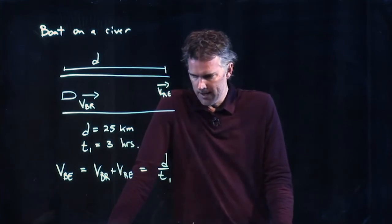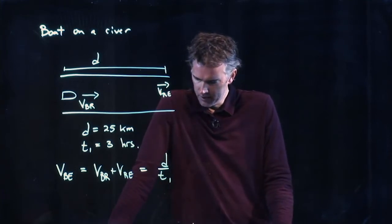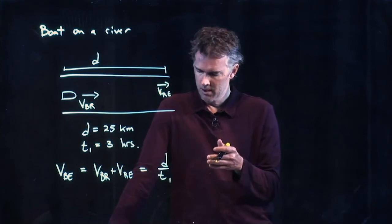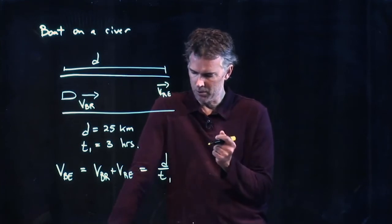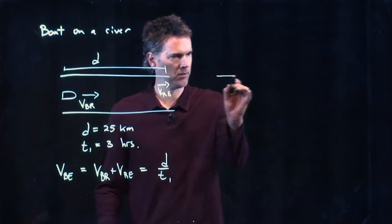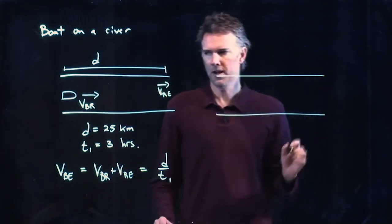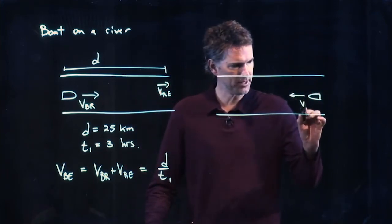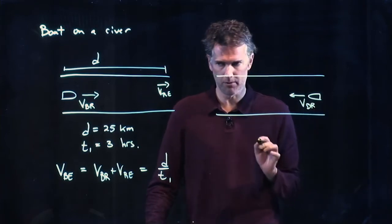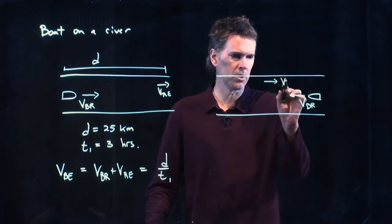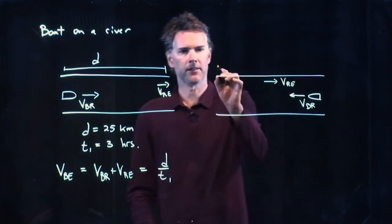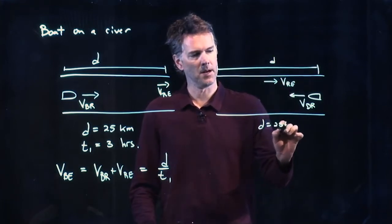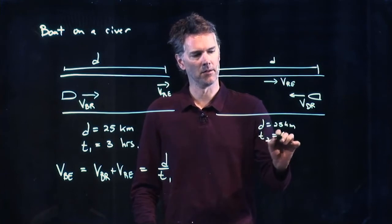Now what about the second part? It says it's going to travel the same speed back up the river relative to the river, but it's going to take six hours to go back up. So let's draw the second case. In the second case the boat is going to turn around. It's going to go up the river. It is still traveling at V of the boat relative to the river. The river is of course going to the right still. And it's going to cover the same distance D. But now it's going to take twice as long, six hours.